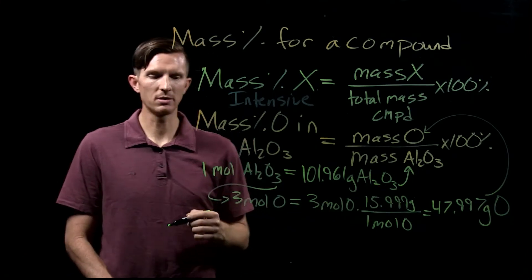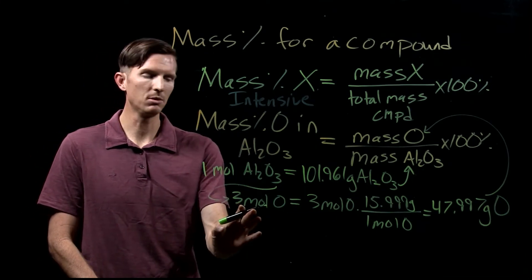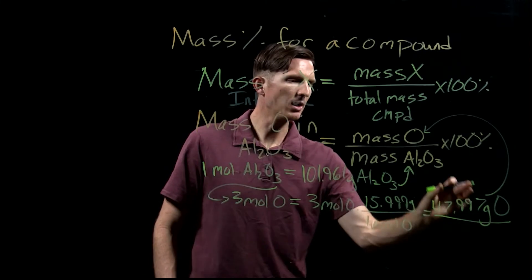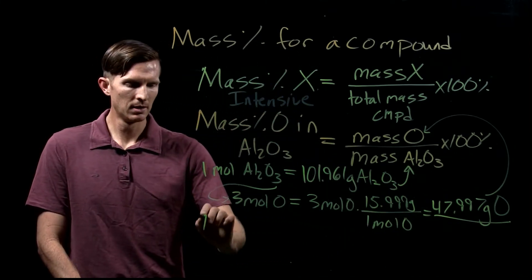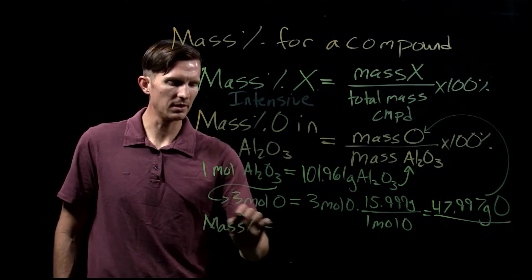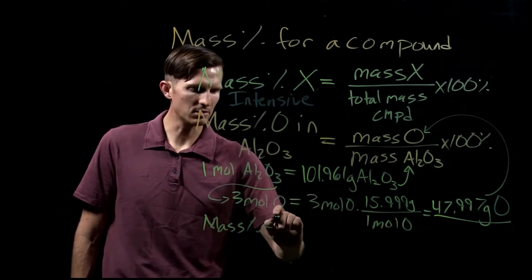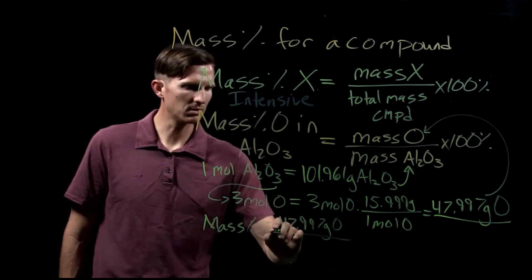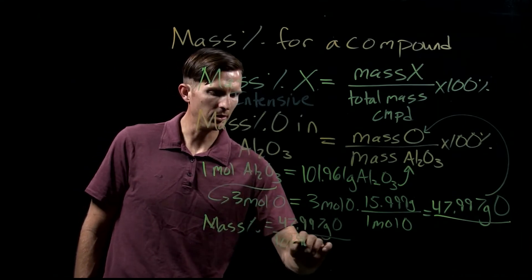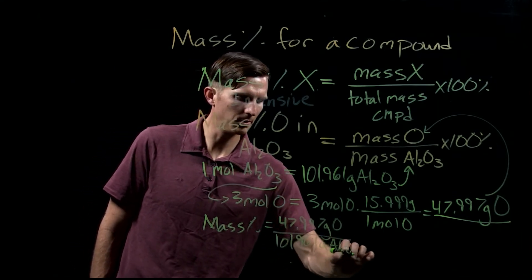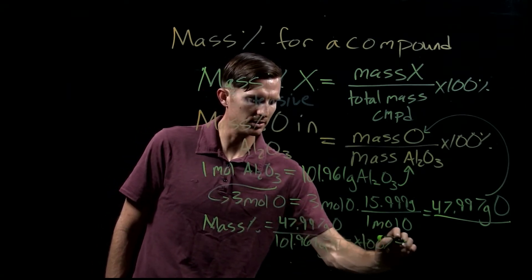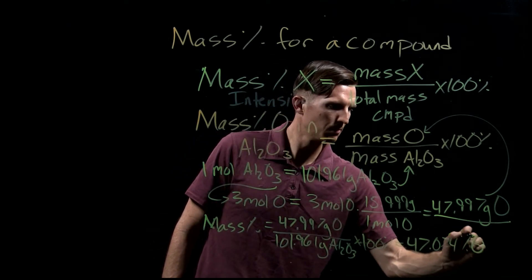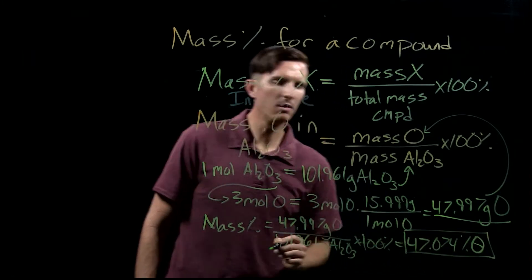That mass of oxygen is relative to the mass of aluminum oxide, because if I have one mole of aluminum oxide I have three moles of oxygen. So now I have the mass of my oxygen and the mass of the aluminum oxide, and we can identify our mass percent. The mass percent equals 47.997 grams of oxygen divided by 101.961 grams of aluminum oxide, times 100 percent, giving us 47.074 percent by mass of oxygen.